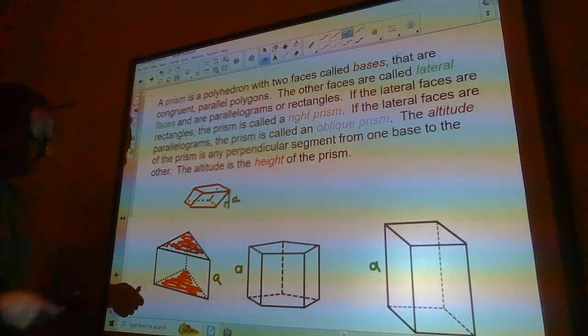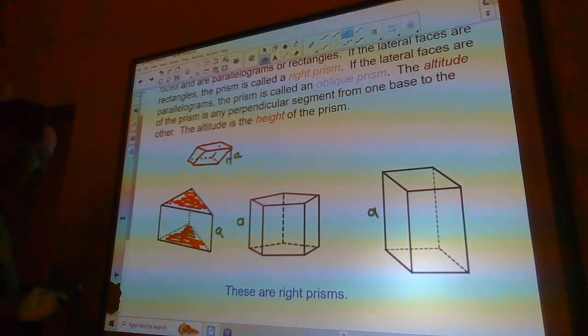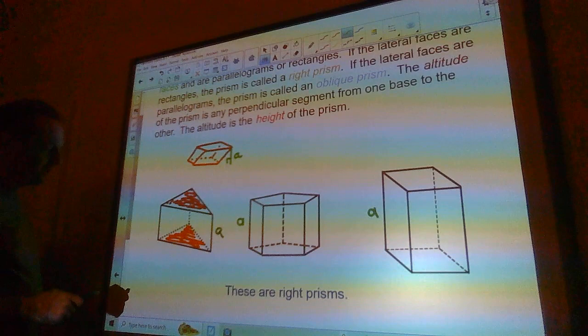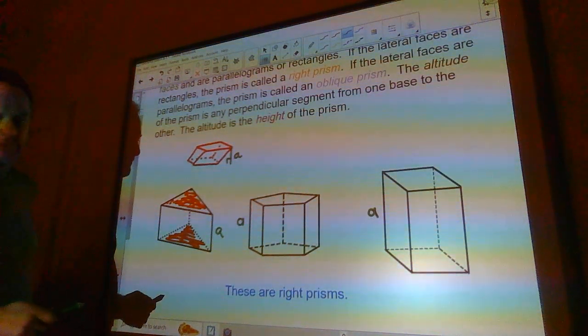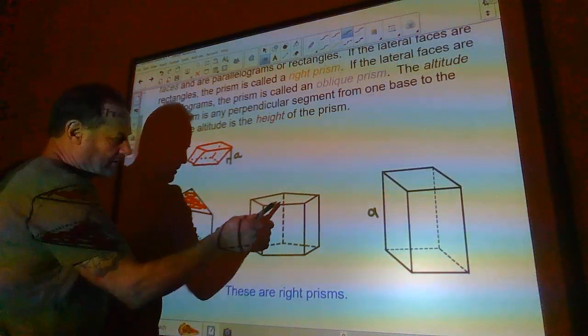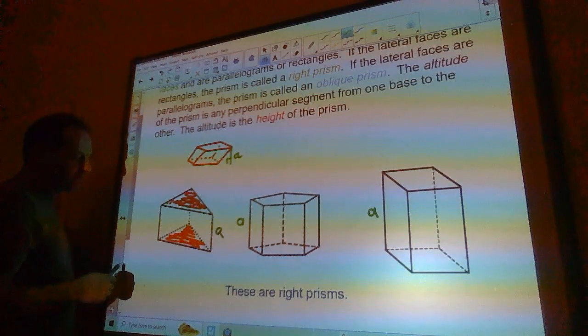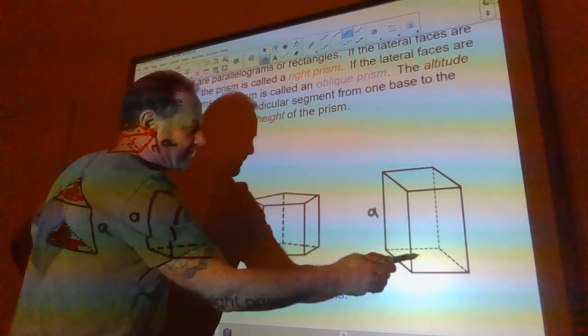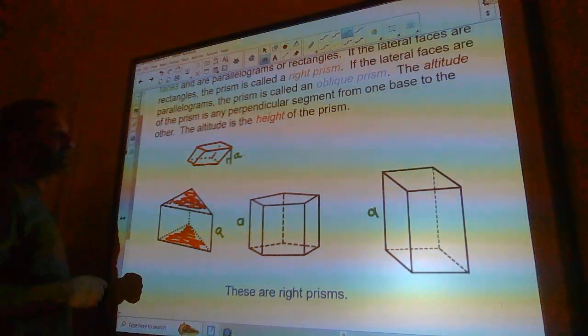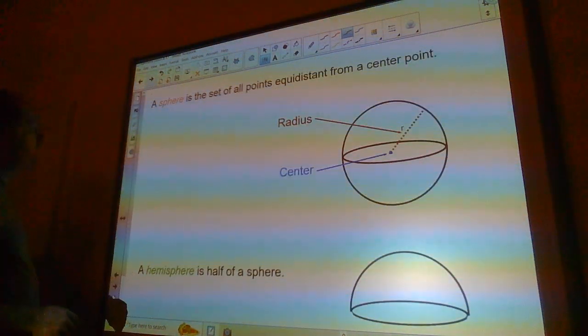And if we go back over here, so on a prism, the sides that are the bases are the sides that are not rectangles. So this would have two bases here. They're pentagons. This had two bases. They were triangles. Now, if they're all rectangles, then whatever the top and the bottom is, is usually considered the base.